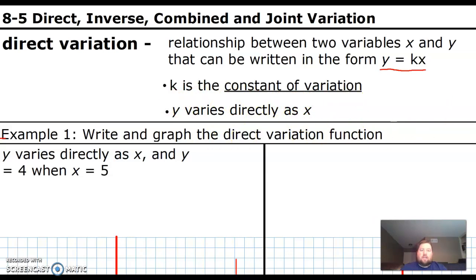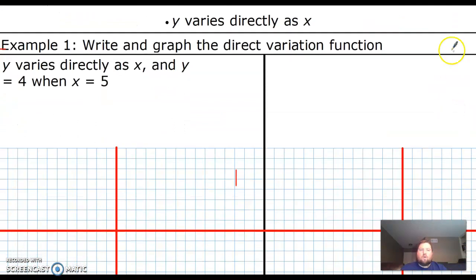First thing we're going to do is learn how to graph these. So y varies directly as x, and y equals 4 when x equals 5. To be able to graph it, we need to know what k is. So what we do is we set up our equation, y equals kx. We plug in the x and y they gave us. So y is 4, and x is 5. And then we solve this equation for k. We just divide by 5. So k equals 4 fifths.